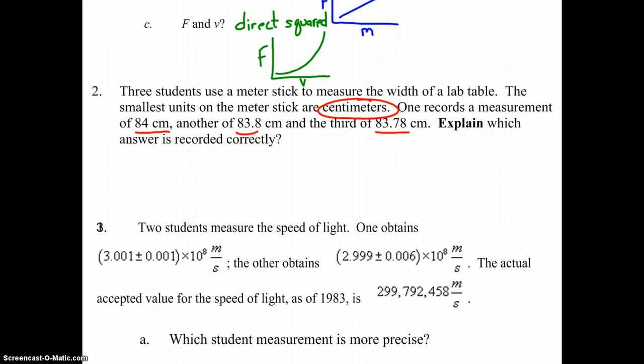The second measurement, the 83.8 centimeters, says that we're confident that there's 80 centimeters, confident that there's three centimeters, and that we're guessing between three and four centimeters of 0.8. This represents the correct measurement.